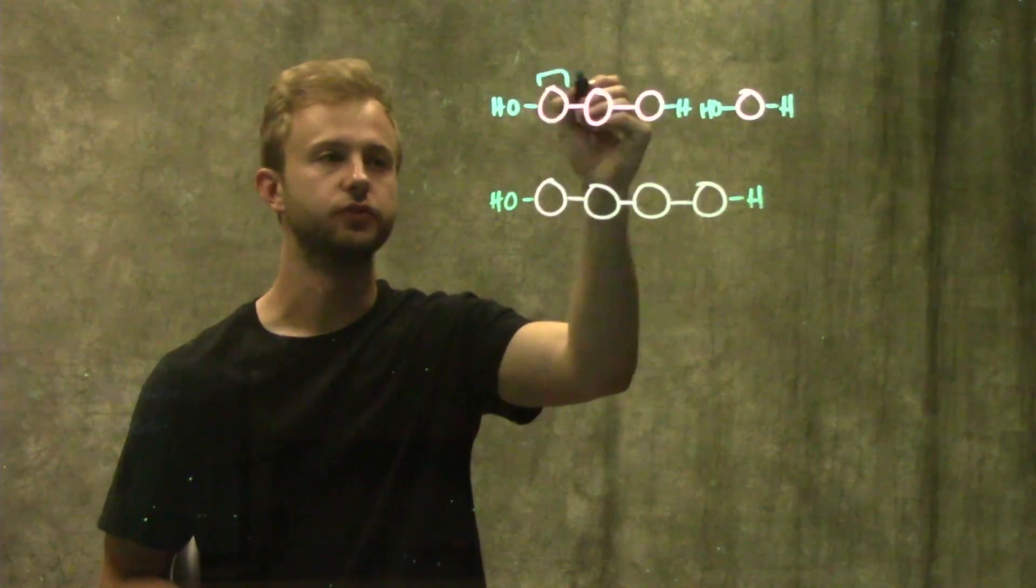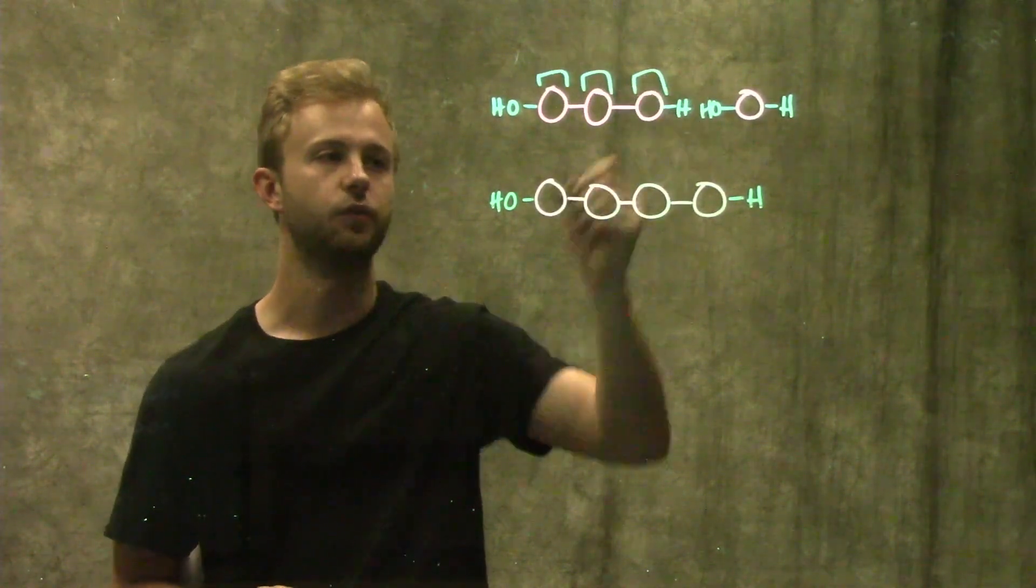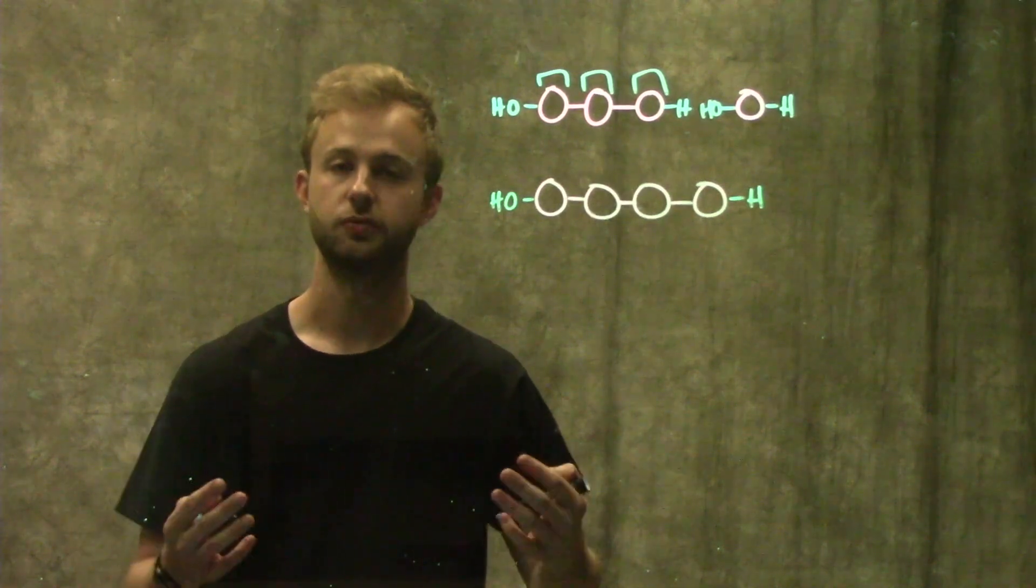Each one of these circles represents one monomer that we're stringing together to make this larger molecule.